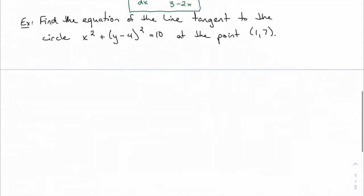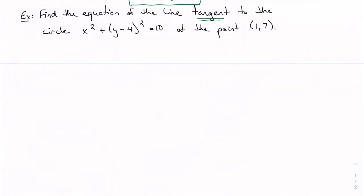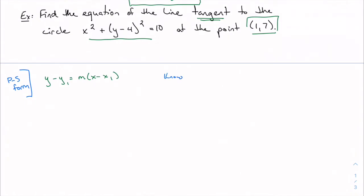One last problem: tangent line problems are still very much in play. Usually now I have to give you the point because these equations aren't easy to solve explicitly. Find the equation of the line tangent to the circle at the point (1, 7). Using point-slope form, I need my point — which is (1, 7) — and the slope, which in calculus is the derivative dy/dx, evaluated at that point.